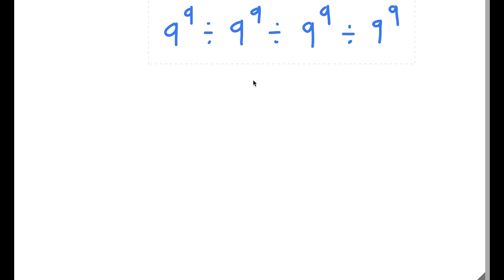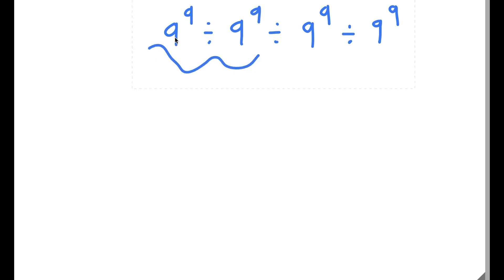So in this problem, I have 9 to the power of 9 divided by 9 to the power of 9 divided by 9 to the power of 9 divided by 9 to the power of 9. What I'm first going to do is simplify this in parts.